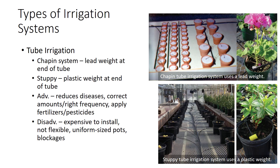For the Chapin system, a lead weight is at the end of the tube, whereas for the Stuffy system, the weight is plastic. One of the advantages of this method is that water is applied directly to the soil without splashing plants with a soil-water mixture every time the plants are watered, thereby reducing the spread of diseases. Another advantage is that individual pots can be watered automatically at the correct amounts and at the right frequency, thereby maximizing plant growth and development. Tube irrigation also enables the grower to apply water-soluble chemicals such as fertilizers and pesticides. The disadvantages are that it is expensive to install and is not flexible. In addition, pots on the bench have to be uniform in size and the tube must be inspected on a periodic basis to make sure no blockage exists as a result of salt buildup.